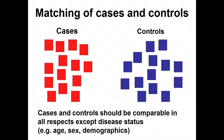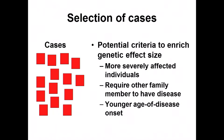In a case-control design, it's important to identify cases and controls that are similar — comparable in every way except disease status — with similar age, sex ratio, and other demographic data. To enrich for the potential to identify disease-causing variants, you might ascertain individuals more severely affected, require that cases have other affected family members suggesting a genetic component, or for older-age-of-onset disease, look for individuals affected earlier in life, as they may have a greater genetic load.